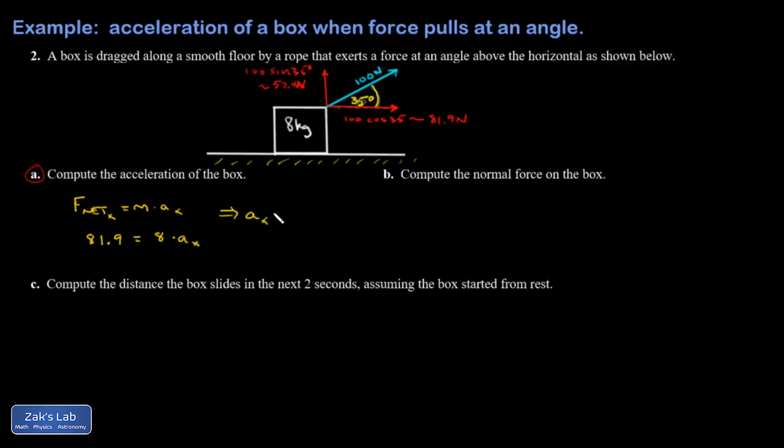I can write a_x or just a, it doesn't really matter. It's going to be 81.9 divided by 8. So I get 10.2 meters per second squared.